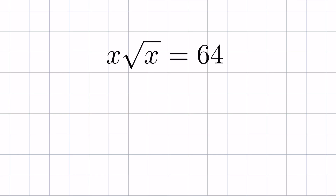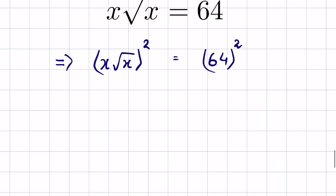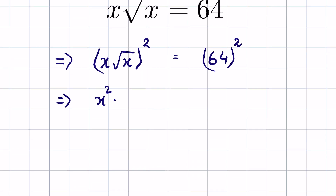x times square root of x is equal to 64. Find the value of x. To remove the square root, we square both sides: x times square root of x, whole raised to the power 2, is equal to 64 squared. This gives x squared times x, because square root of x squared cancels the square root.